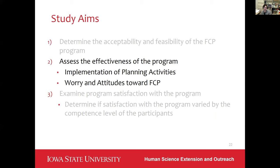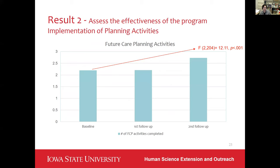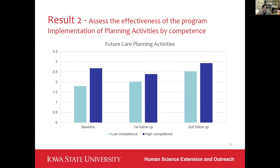Our second aim was to assess the actual impact of the program by examining its effectiveness — specifically, the implementation of planning activities and behavior change over time, as well as changes in worry and attitudes towards future care planning. A repeated-measure general linear model analysis showed significant changes in the number of activities across three time points. Although completion rates were higher for the high competence group, both groups showed significant change over time in completing future care planning activities.